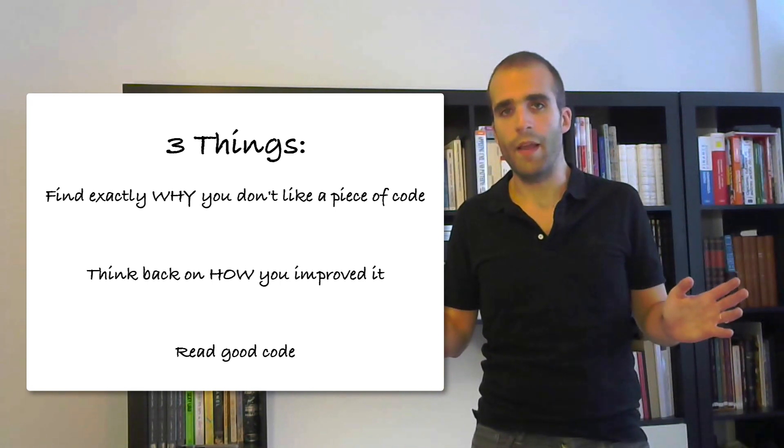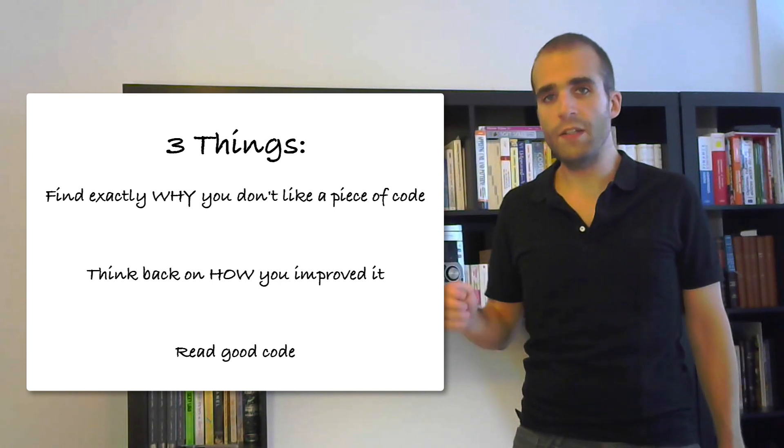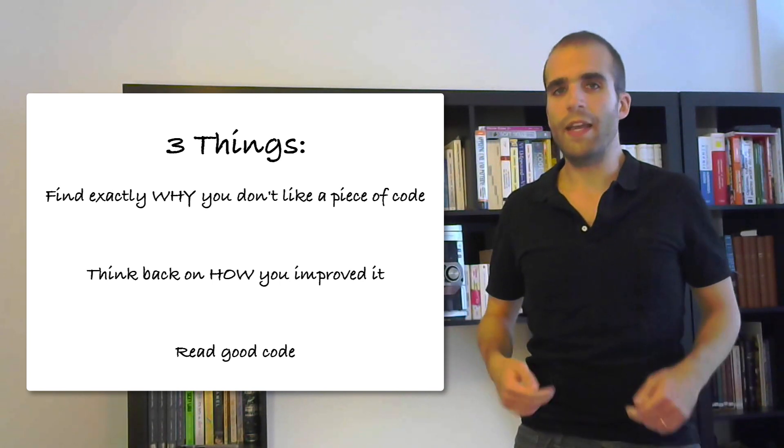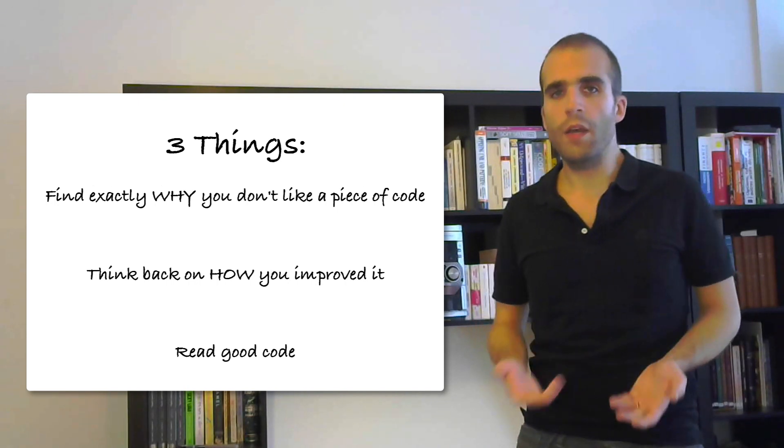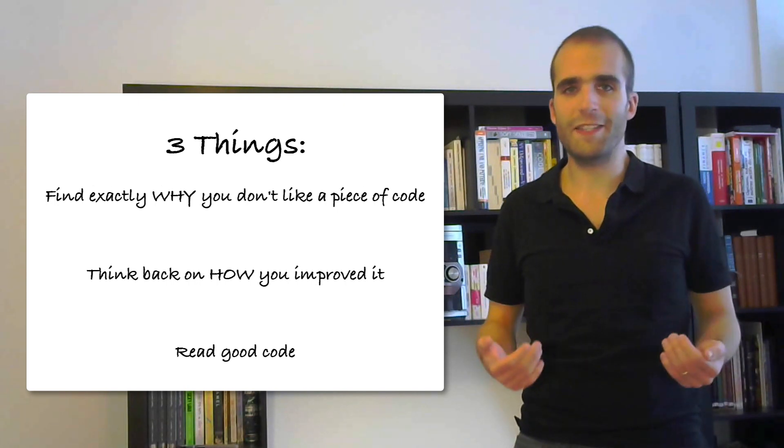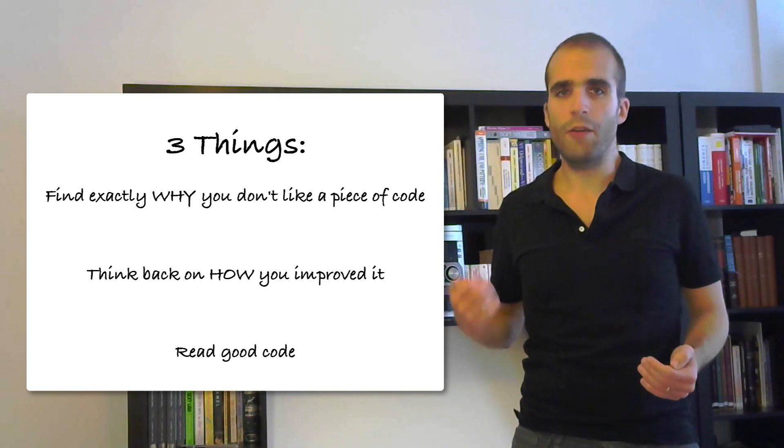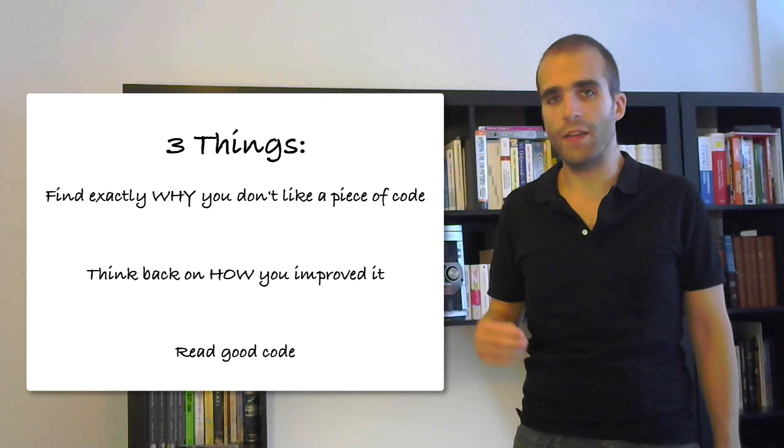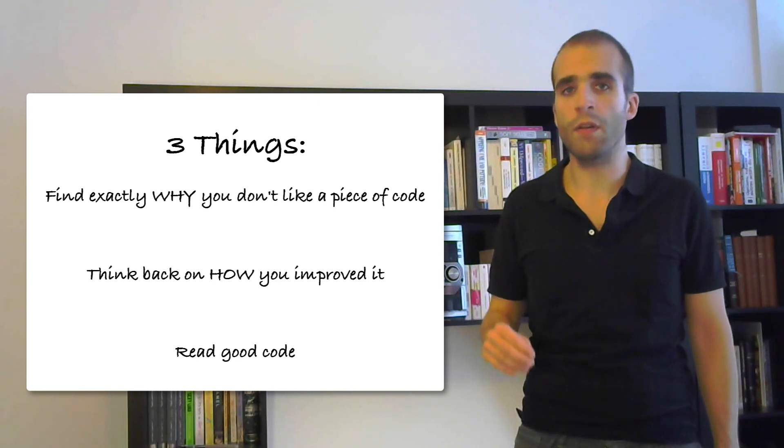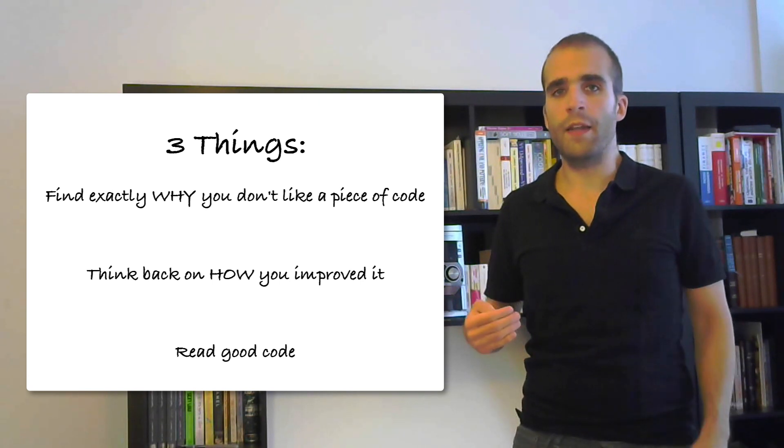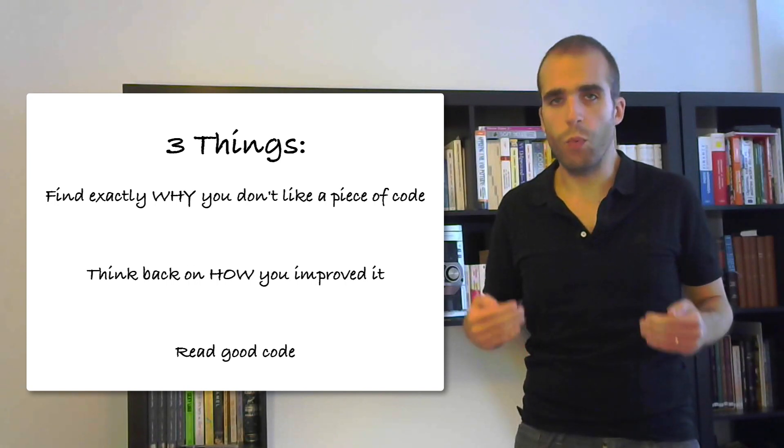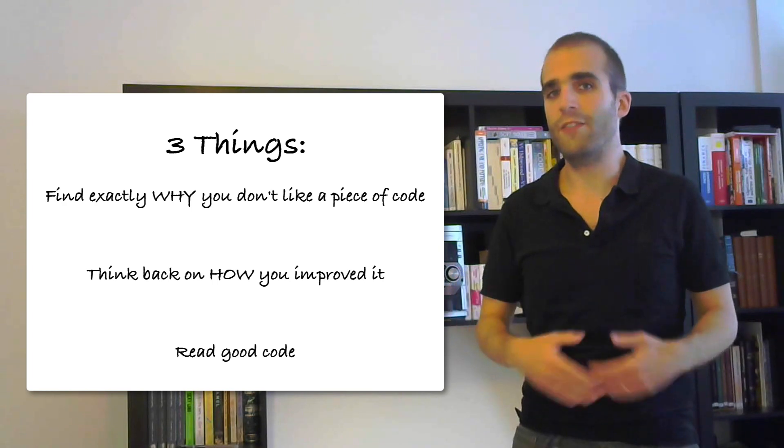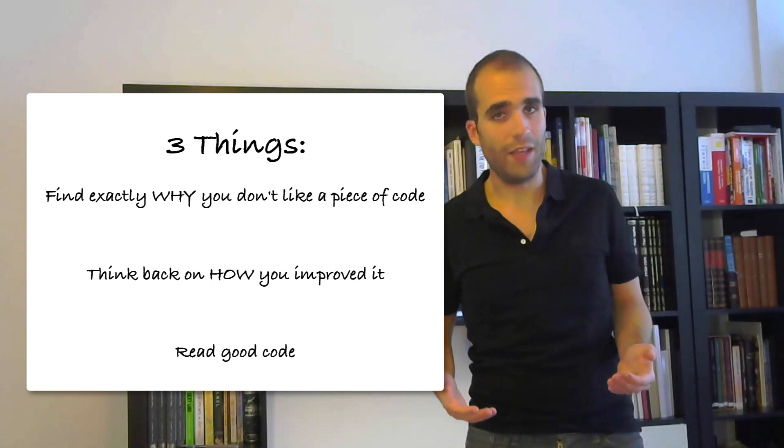So in summary I'd advise you to read great code as much as you can so that you get a feel of what good code looks like, and then when you face this bad code you're going to recognize it. Analyze it. Try and formalize what's wrong in a piece of code you don't like, and if you do fix it, then think back at what you did and extract a generic technique that you can reuse for future pieces of bad code that you meet.